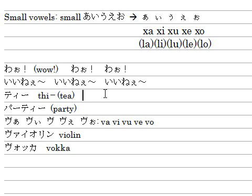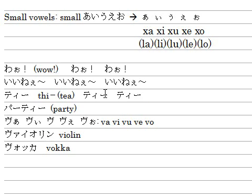The next example is ティ, which means something like 'black T' or 'green T.' Te is T-E, and small i is X-I. But you can also just type T-H-I — it's much easier! Hit F7 for katakana. T-H-I gives you ティ.